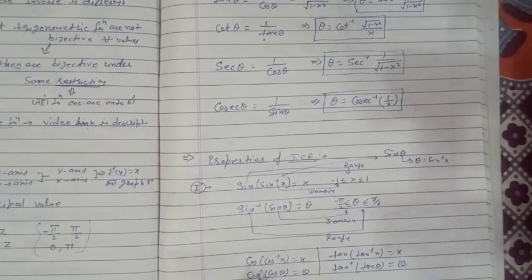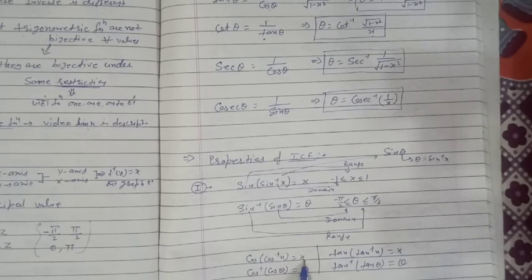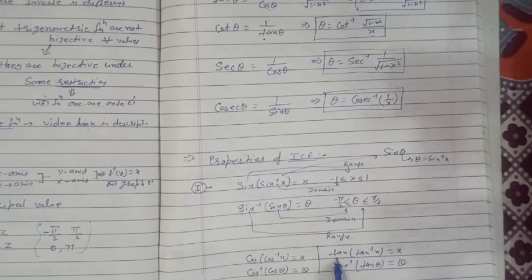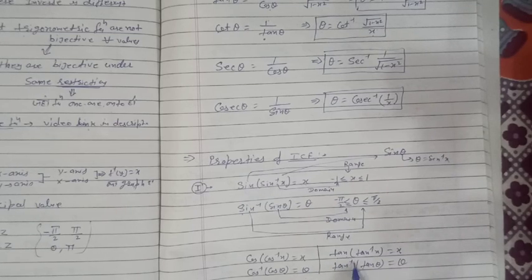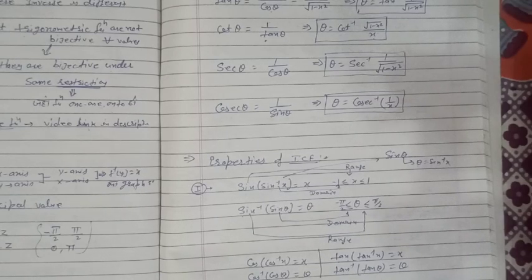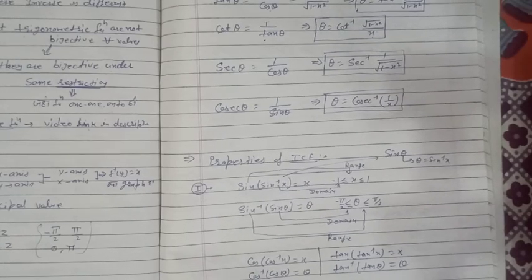Similarly, we can define these properties for cosine: cos(cos⁻¹x) = x and cos⁻¹(cos θ) = θ. Similarly for tan: tan(tan⁻¹x) = x and tan⁻¹(tan θ) = θ. Now let's see how to apply these properties with two examples.